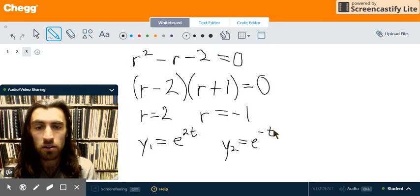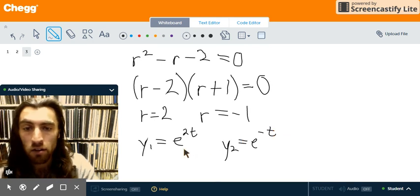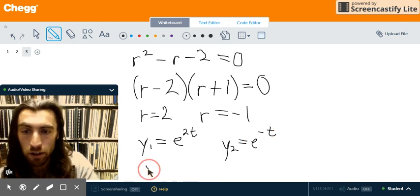Great. So, we have two solutions to this equation that corresponds to the fact that it's a second-order equation, meaning that the highest derivative is the second derivative. And so, we now want what we call the general solution.